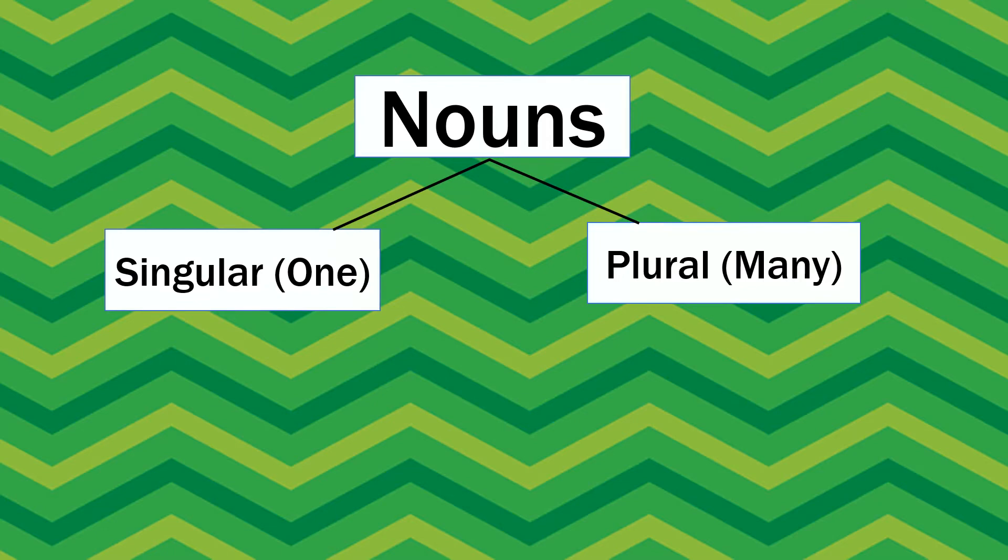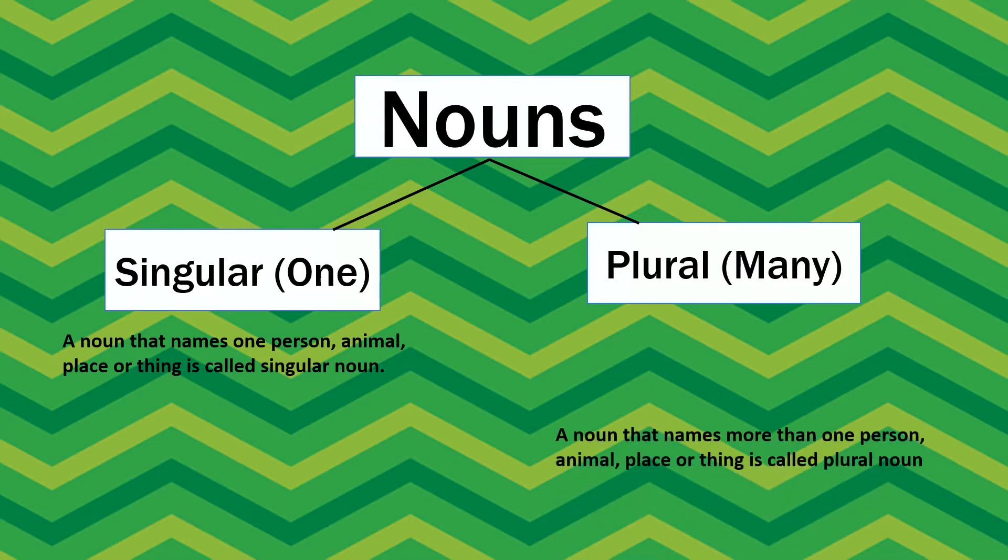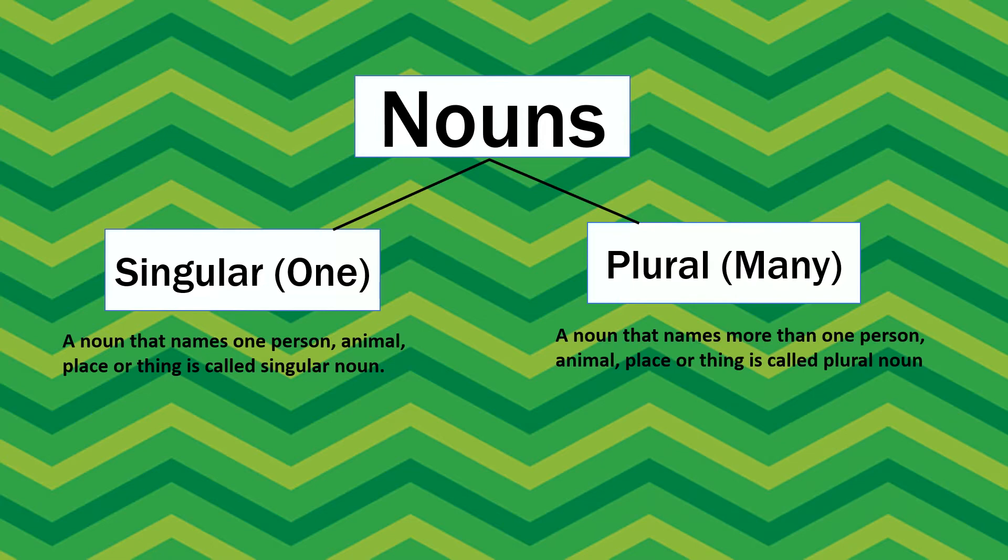What is a singular noun? A noun that names one person, animal, place or thing is called a singular noun. What is a plural noun? A noun that names more than one person, animal, place or thing is called a plural noun.